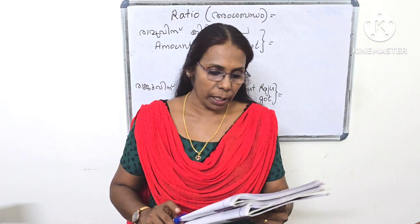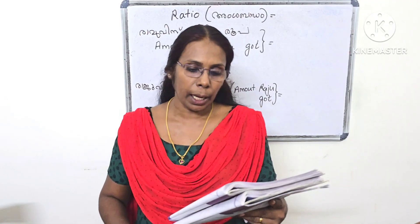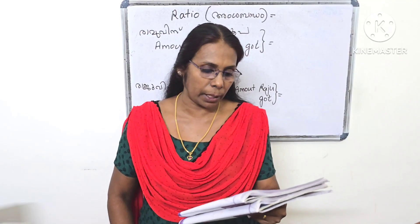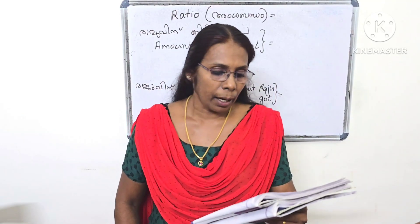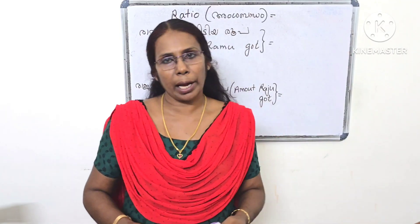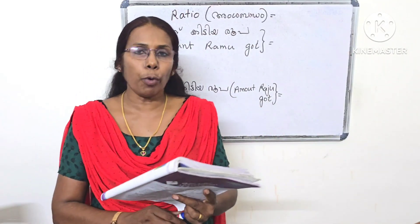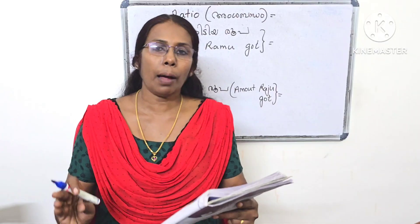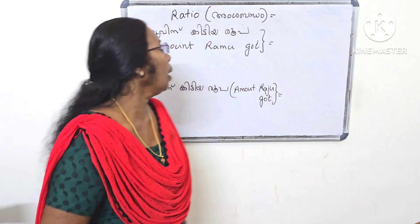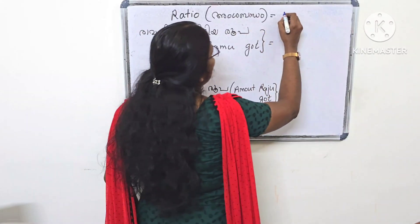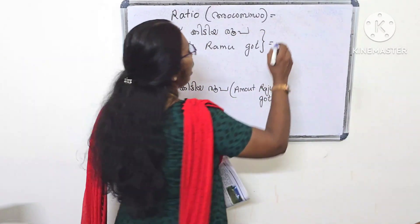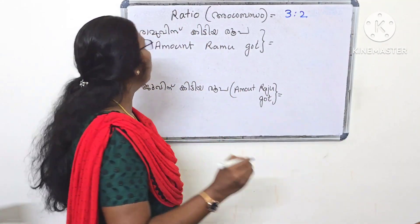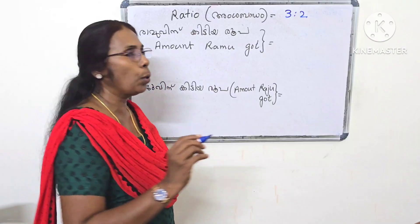When Dhamu and Raju divided a sum of money in the ratio 3 is to 2, Dhamu got 480 rupees. How much did Raju get? What was the total sum that was divided? If the ratio is 3 is to 2, Dhamu's share corresponds to 3 parts.